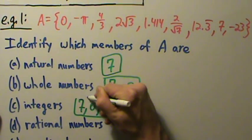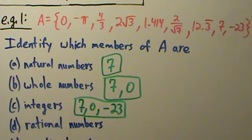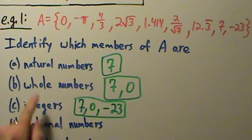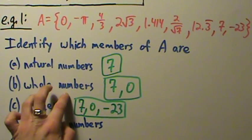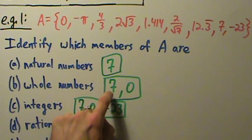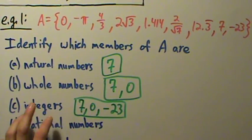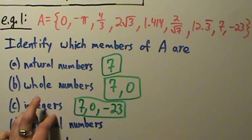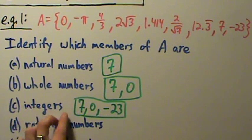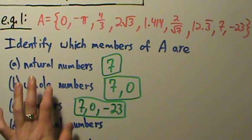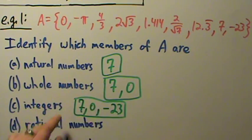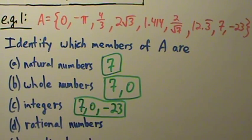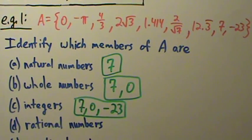It is very important to remember that every natural number is a whole number, so the answer to the whole number still includes seven. Every whole number is an integer, so the answer to the integer part also includes all the whole numbers.